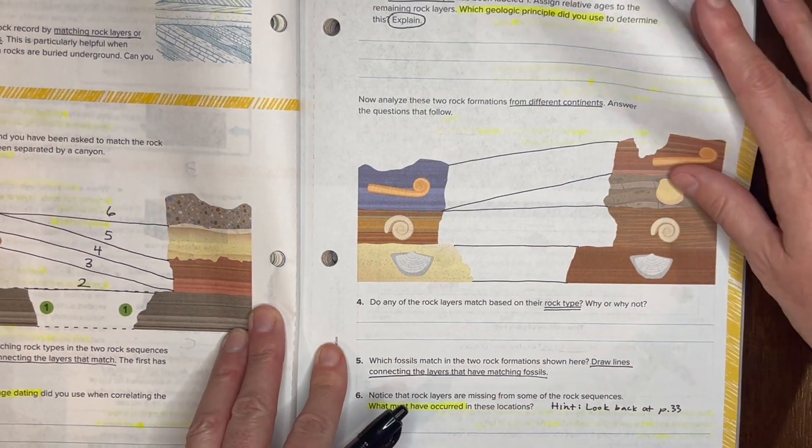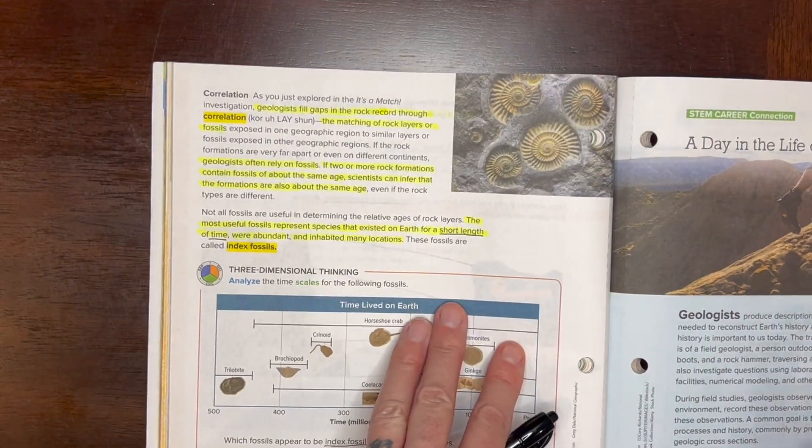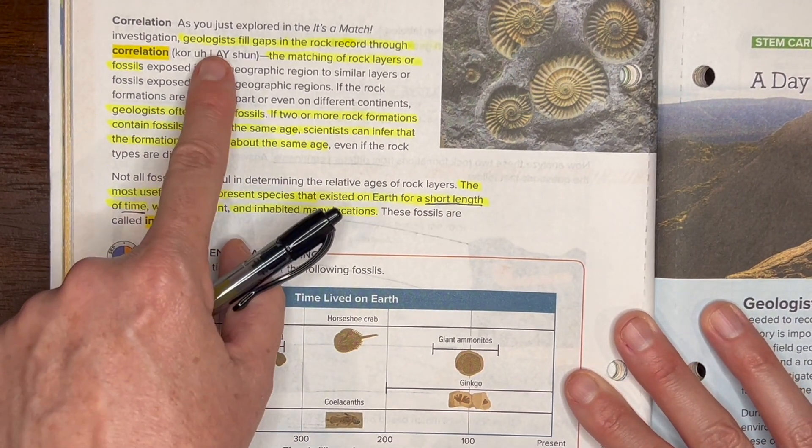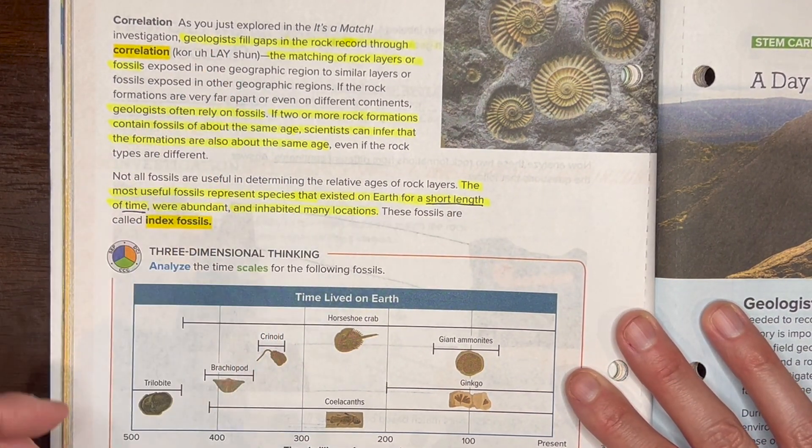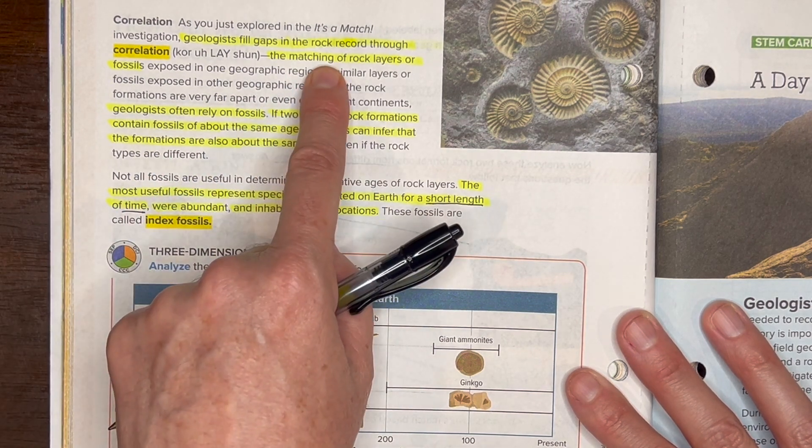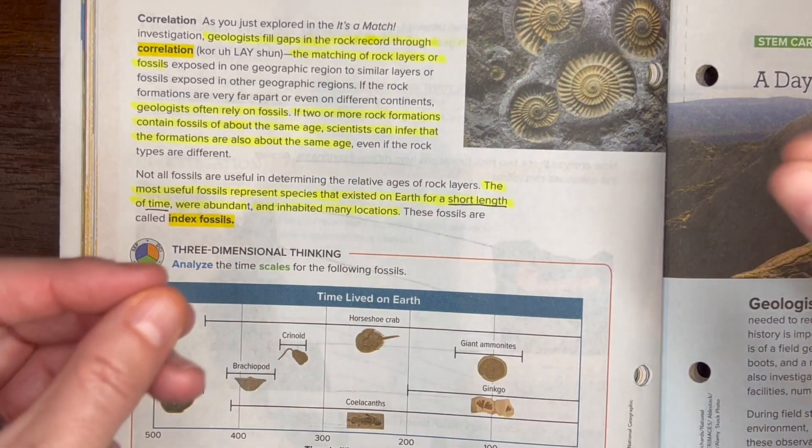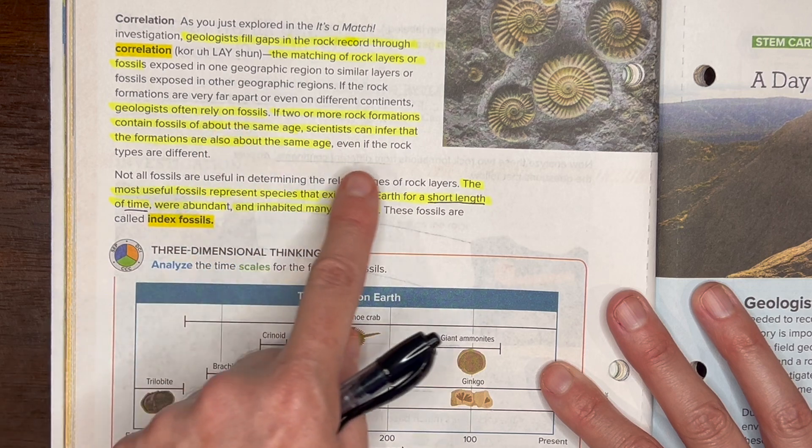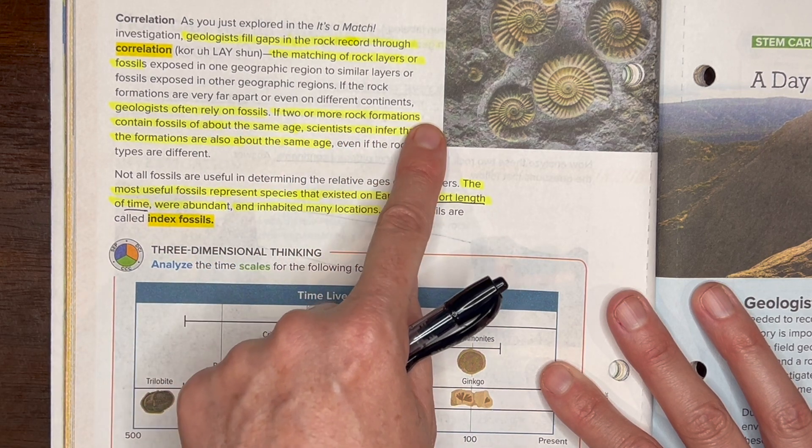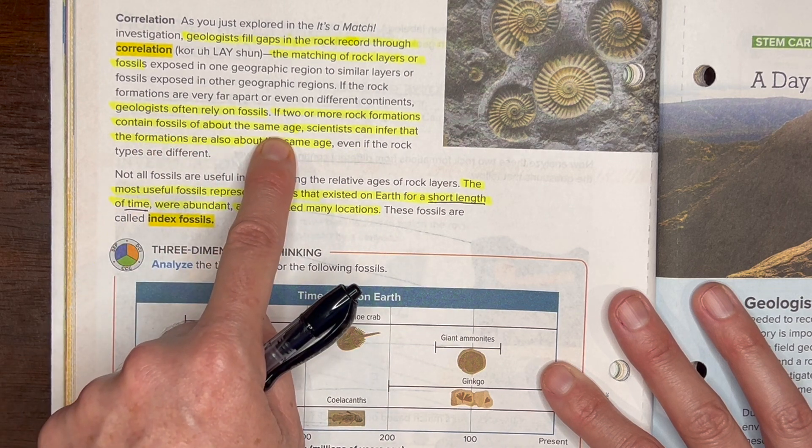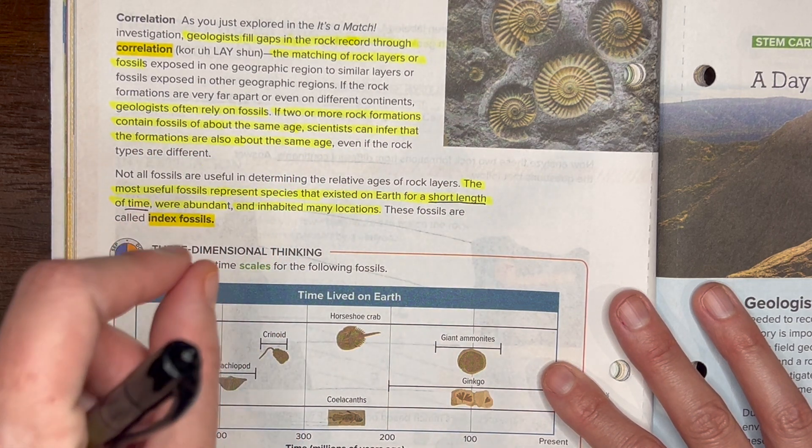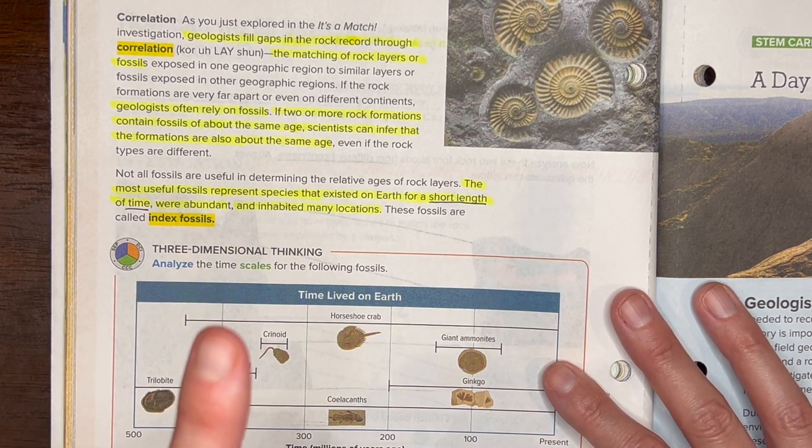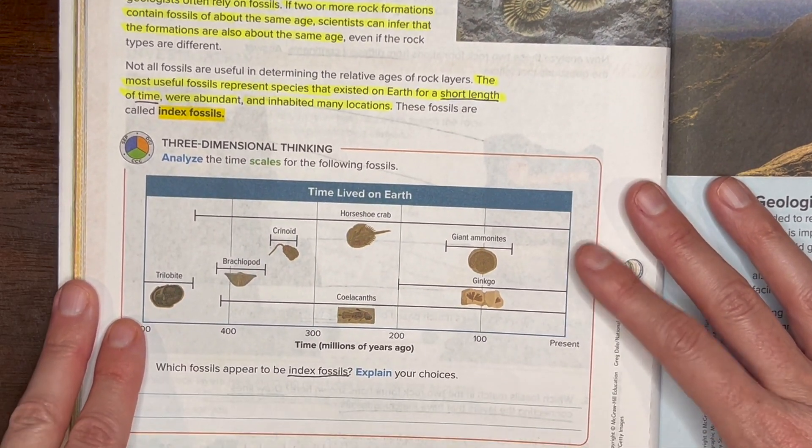Okay, let's go ahead and turn to page 36 and we're going to talk about correlation. Correlation, this is a great word. Geologists use this word to really give them the clues that they really need because they are matching rock layers or fossils from different locations. They really rely on these fossils because the rock type is probably not going to be the same, but the formations that contain these fossils should be the same age.